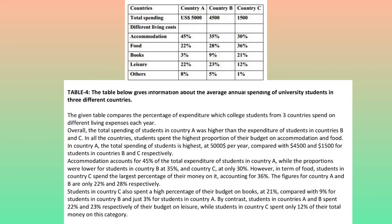In Country A, the total spending of students is highest at $5,000 per year, compared with $4,500 and $1,500 for students in Countries B and C respectively. Accommodation accounts for 45% of the total expenditure of students in Country A, while the proportions were lower for students in Country B at 35%, and Country C at only 30%.